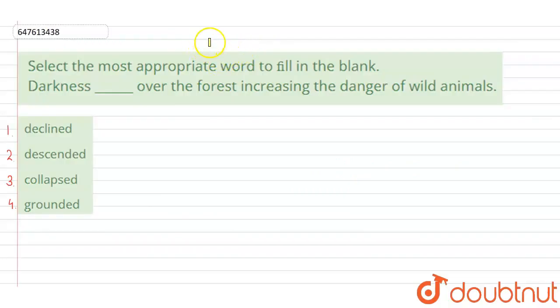The question is, select the most appropriate word to fill in the blank. And the sentence is, darkness blank over the forest, increasing the danger of wild animals. And the four options are: declined, descended, collapsed, grounded. We will tell you which option is suitable.